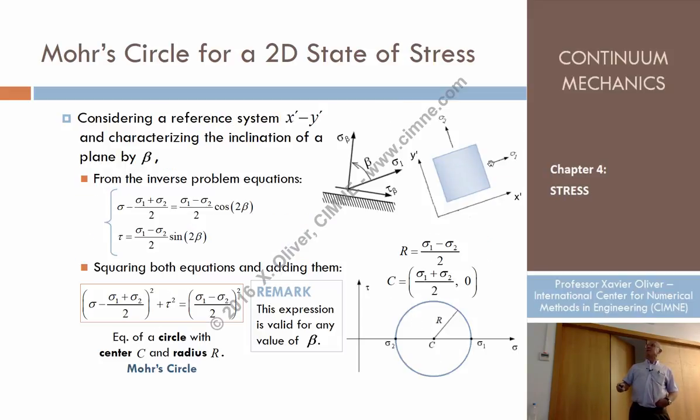If that is the plane where sigma 1 acts, the representative point in the Mohr space is that, because normal sigma is sigma 1, tangential sigma is 0. And in that plane, normal sigma is sigma 2, tangential sigma is 0. So these are the representative points of the first principal plane, and this is the representative point of the second principal plane.